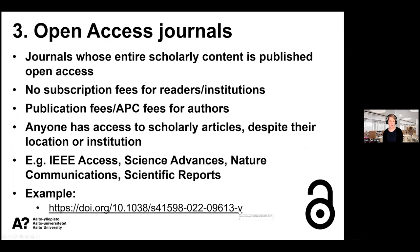Open access journals are journals in which the whole content is available open access — all articles in the journal are available to anyone, regardless of country, location, or institution. There are no subscription fees for readers or institutions, but usually there are publication fees, so-called APC fees, for the authors. A few examples of open access journals are IEEE Access, Science Advances, and Nature Communications.